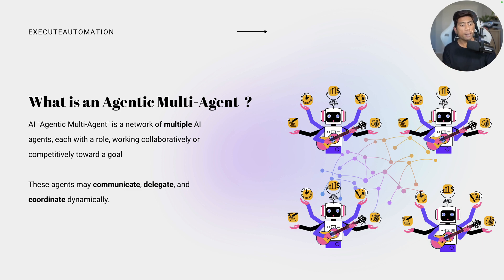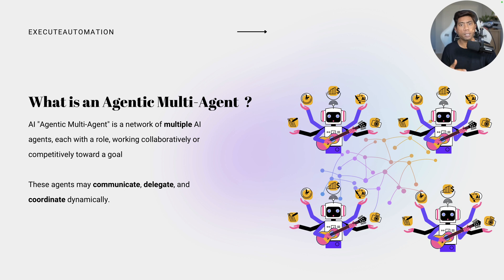You guessed it right. An agentic multi-agent system is a network of multiple AI agents, each with a role, working collaboratively or even competitively towards a specific goal. These agents may communicate, delegate, and coordinate dynamically to perform or achieve those operations. That is the power of agentic multi-agent systems — they know how to accomplish a task efficiently and give you the response you're looking for.